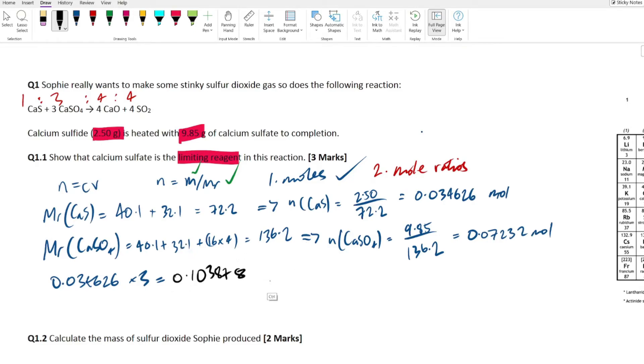So let's do that. 0.034626 times three equals, let's do that in the calculator, 0.1038 seven eight. Now, because this number is greater than this number, it means that the calcium sulfate is limiting. This one should be three times, at least three times this, for it not to be limiting. Hopefully that makes sense.